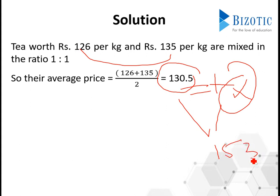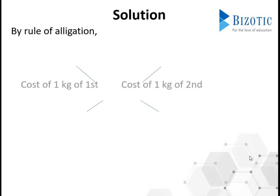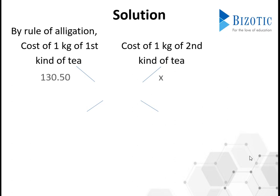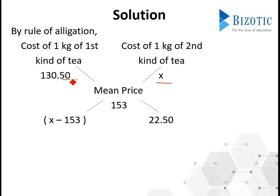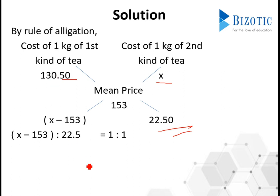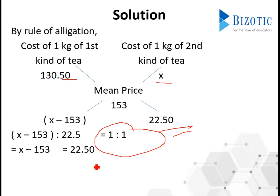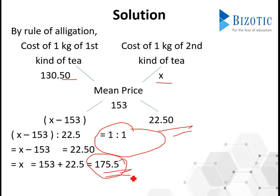The mean is given as 153. By the rule of allegation, the cost of the first kind is 130.50, and the next kind is X. We get: X minus 153 and 153 minus 130.50 = 22.50. Since both are mixed in the ratio 1:1, X minus 153 equals 22.50. Therefore X = 22.50 + 153 = 175.50, which is the price of the third variety.